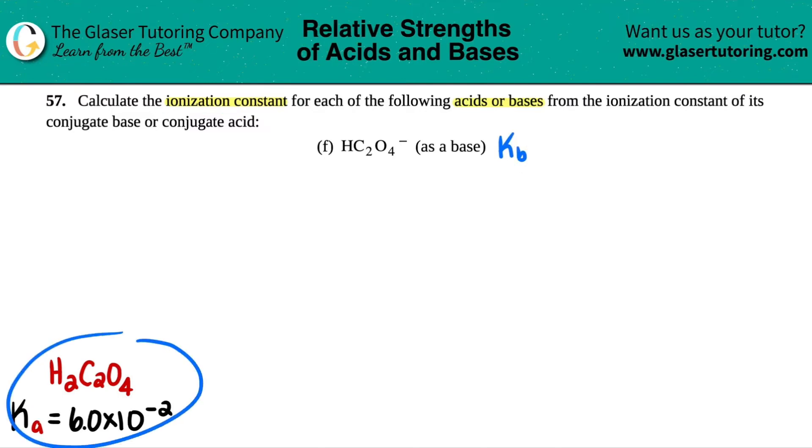Now I went in the back of the textbook to find out what the conjugate acid for HC2O4 is. Remember, conjugate acids, you always just add one hydrogen, and the Ka value is 6.0 times 10 to the negative 2. So in essence, all we're doing is converting from Ka to Kb.